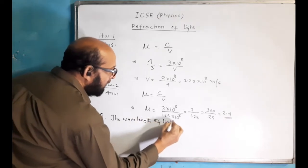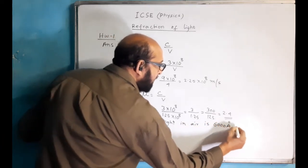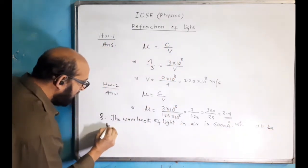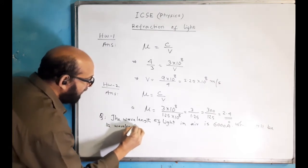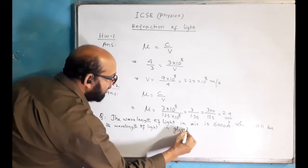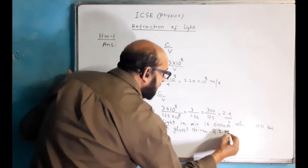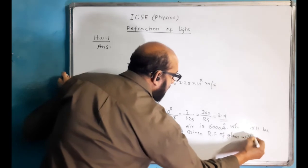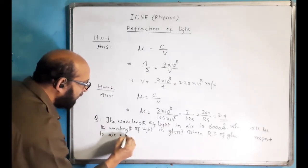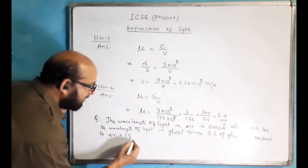The wavelength of light in air is 6000 angstrom. What will be the wavelength of light in glass? Given: refractive index of glass with respect to air, mu = 1.5. This time the question talks about wavelength, and our answer will come the same way.